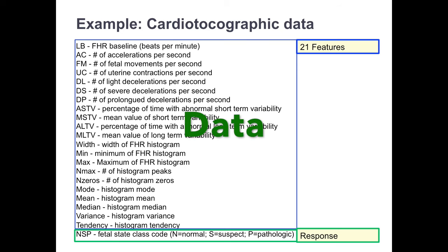For making a decision tree, we will make use of this CTG data which has 21 features and the response variable is NSP, which represents fetal state class code. This classification into normal, suspect, or pathologic state is done by 3 medical experts and their consensus classification has been labeled as either normal, suspect, or pathologic.